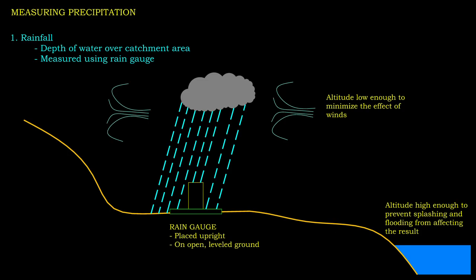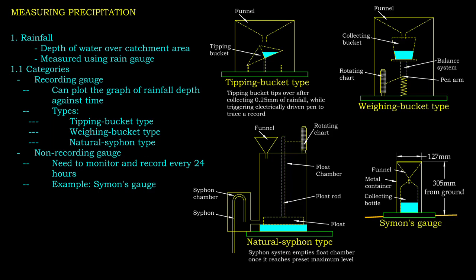To measure precipitation accurately, the device should be placed upright on open, level ground. The altitude should be strategically planned so that the device is high enough to not be affected by flooding and splashing, while low enough to have insignificant wind effects. Rain gauges can be further classified into recording and non-recording gauges.